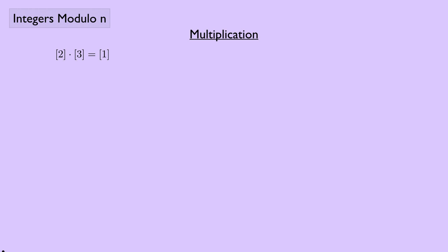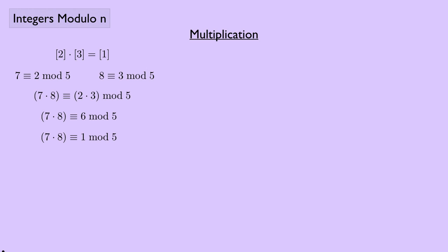We've tackled addition; now let's look at multiplication. Using the example of [2] × [3] = [1] mod 5: I chose 7 ≡ 2 (mod 5) and 8 ≡ 3 (mod 5), and 7 × 8 ≡ 2 × 3 (mod 5), i.e., 56 ≡ 6 ≡ 1 (mod 5). To generalize: if a₁ ≡ a₂ (mod n) and b₁ ≡ b₂ (mod n), then a₁b₁ ≡ a₂b₂ (mod n).